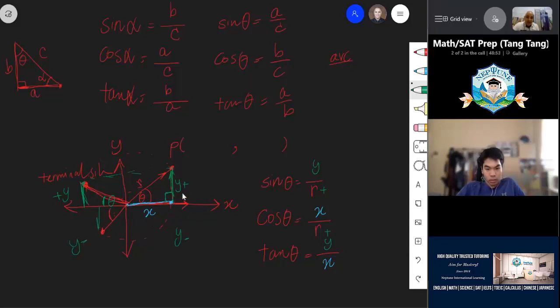Same with cosine. Cosine x is positive in quadrant one. In quadrant two, negative. Quadrant three also negative. But in quadrant four is positive. And then your tangent depends on which quadrant, because y over x.